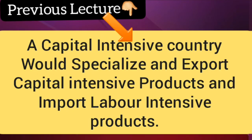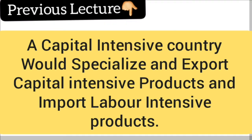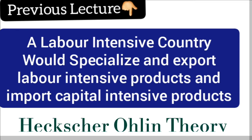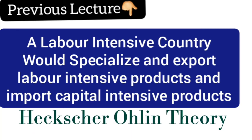According to Heckscher-Ohlin theory, a capital intensive country would specialize and export capital intensive products and import labor intensive products. Similarly, a labor intensive country would specialize and export labor intensive products and import capital intensive products. This is the mechanism of trade according to Heckscher-Ohlin theory.